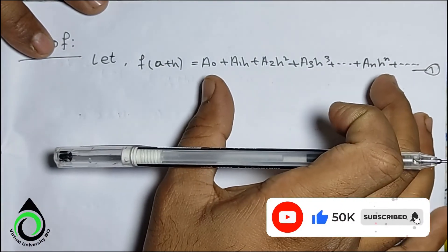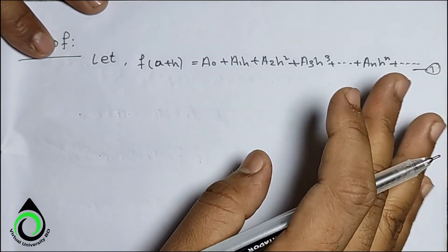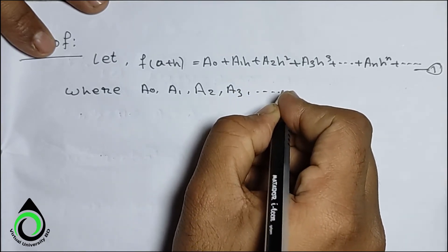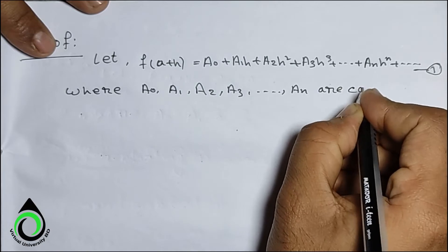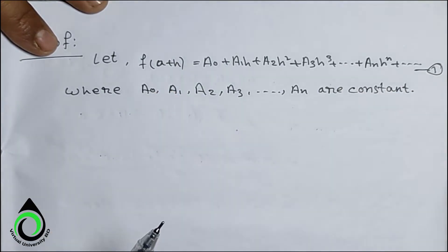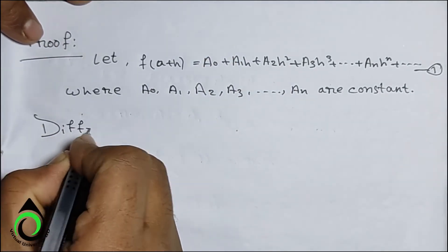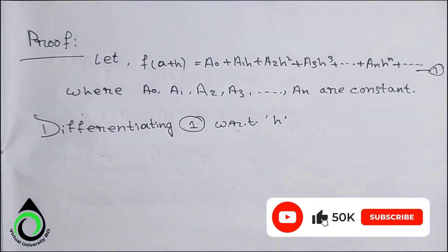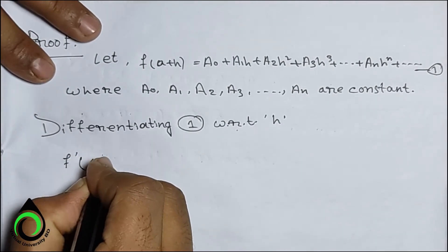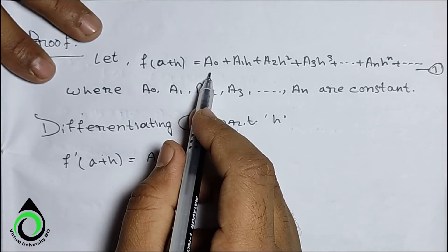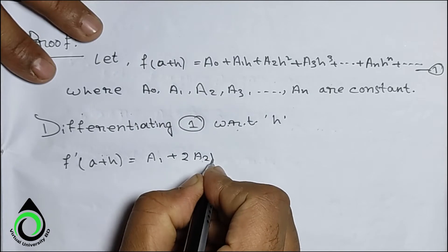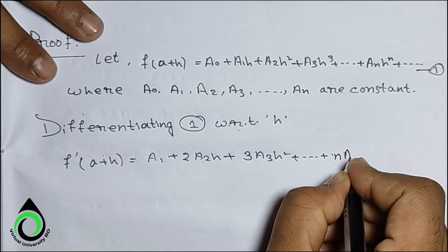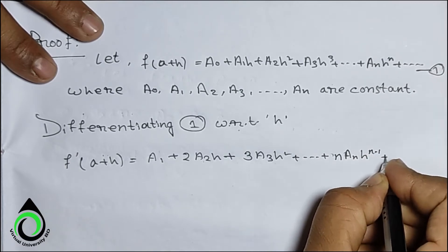In this case we have a function which we have to work with. We have a₀, a₁, a₂, a₃, etc., where a₀, a₁, a₂, a₃, etc. are constants. So what are we going to do — differentiate this first time. Differentiating equation (1) with respect to h, we get: f'(a+h) = a₁ + 2a₂h + 3a₃h² + ... + naₙhⁿ⁻¹ + ... — equation (2).